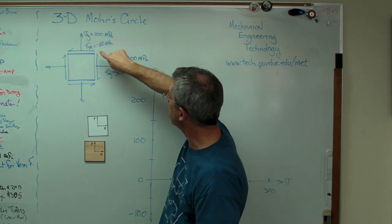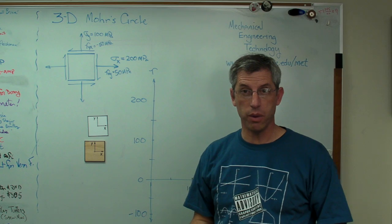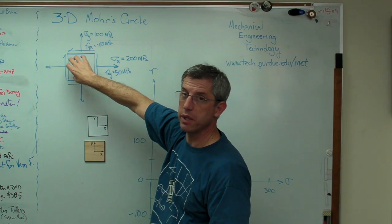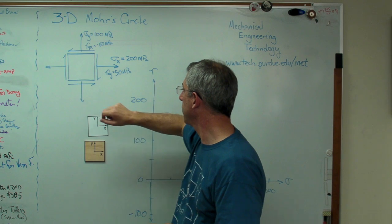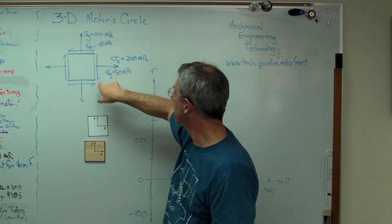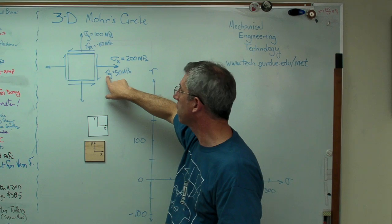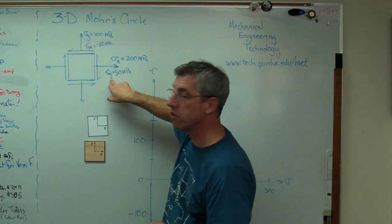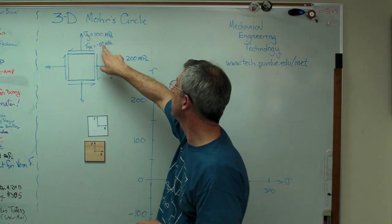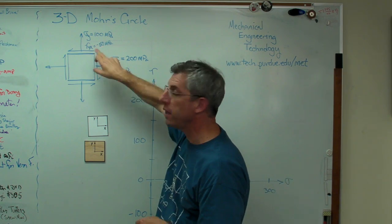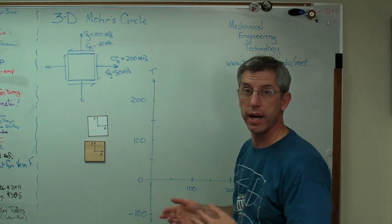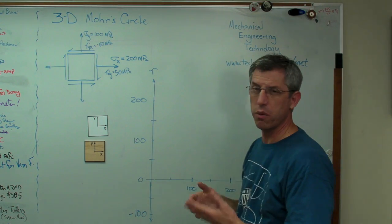And the shear on the y-face is minus 50 MPa. Now if you remember, tau xy and tau yx have to be equal and opposite. If they weren't, there would be a net moment here, and this wouldn't be static anymore. This would be rotating. And if you want to remember the terminology here, tau xy means x-face shear stress in the y-direction, and this means y-face shear stress in the x-direction. So that's why you have yx and xy, or a way to remember it anyway.